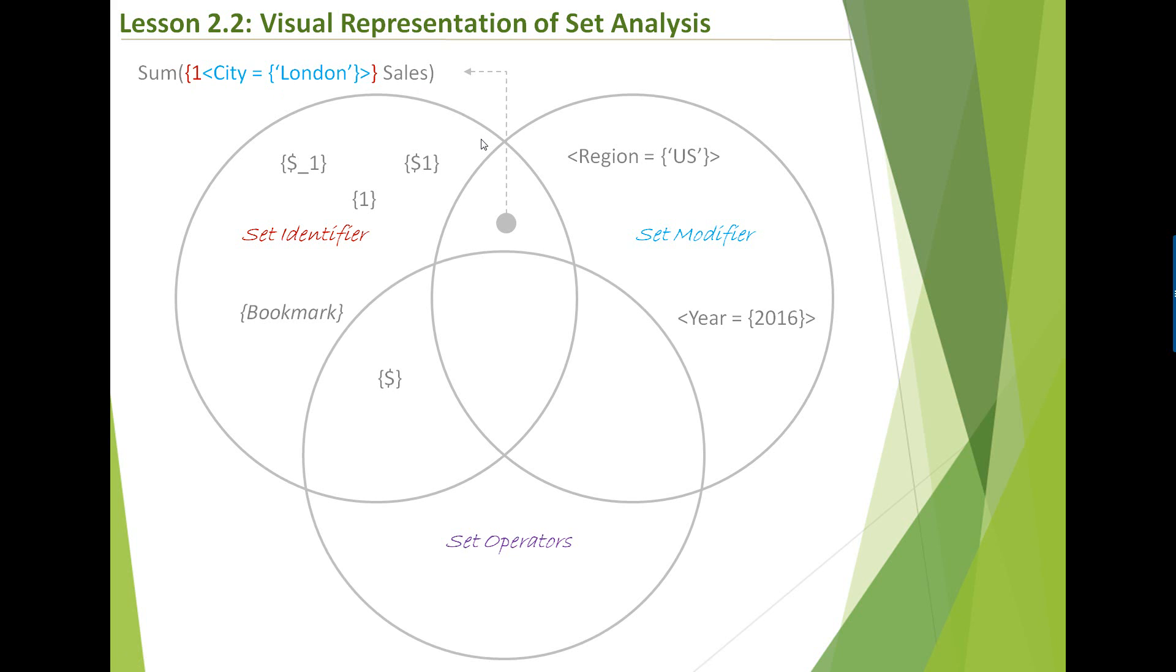Moving on, if you look at the set operators. Now that we have seen set identifiers and set modifiers, the third component is set operator. Set operators are very close to your algebra operators. Plus sign doesn't mean addition here. They're more like your set operator, so plus sign here means union. And then the next one is the minus sign. And then we have intersection, and then symmetric difference. There are multiple lessons which are dedicated to set operators, so we'll look at all of that.